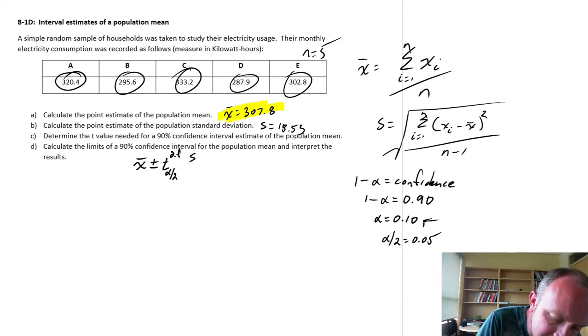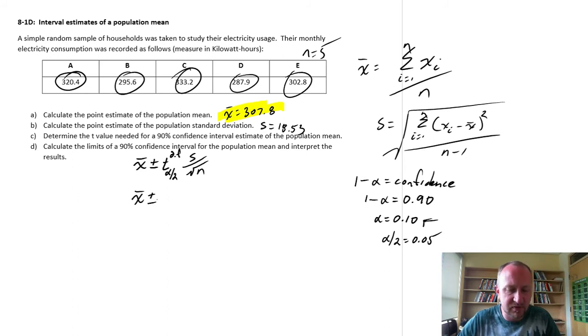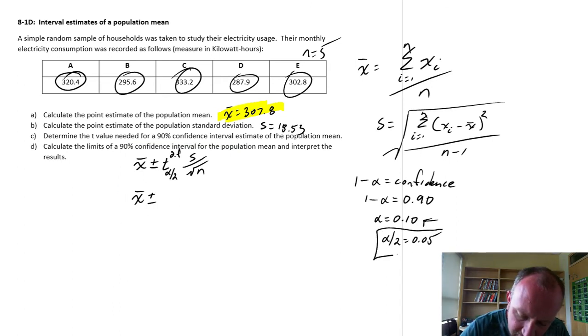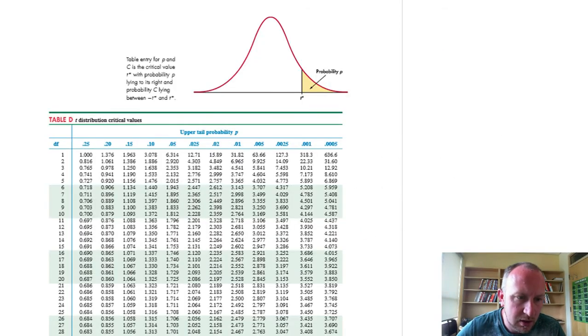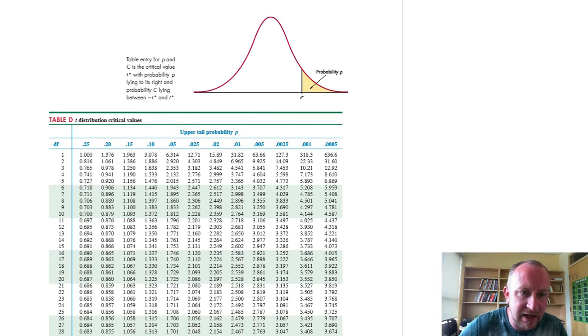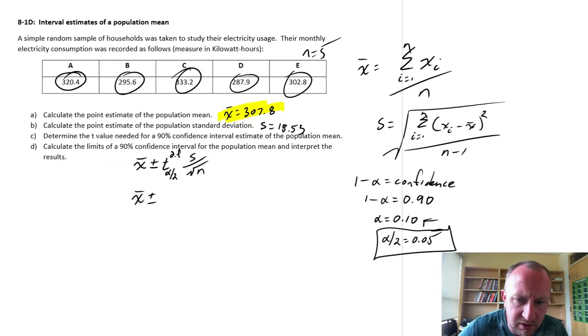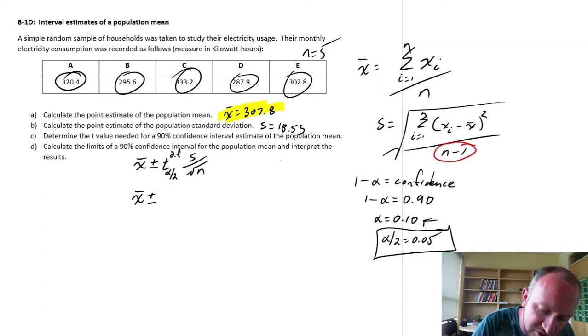And then this is times the standard error. So S over root n. So x̄ plus or minus. Let's go find that T value. And this is the T that corresponds to an area of 0.05. We need to know what our T distribution is. I have n minus 1 degrees of freedom. n is 5, so our degrees of freedom n minus 1 is 5 minus 1 is 4 degrees of freedom.